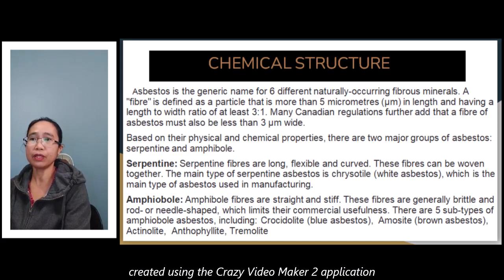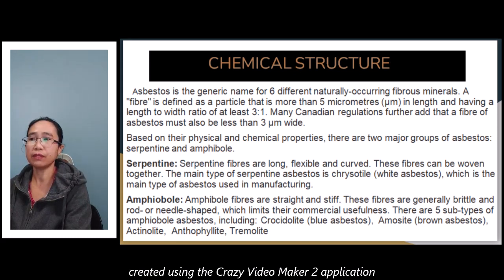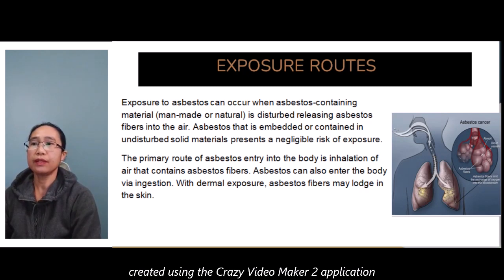Amphibole fibers are straight and stiff. These fibers are generally brittle and rod- or needle-shaped, which limits their commercial usefulness. There are five types of amphibole asbestos, including crocidolite (blue asbestos), amosite (brown asbestos), actinolite, anthophyllite, and tremolite.